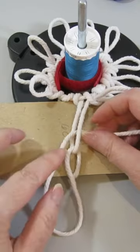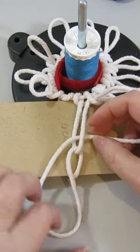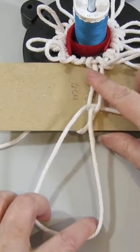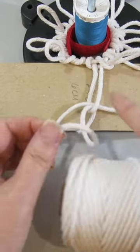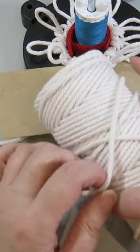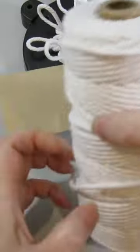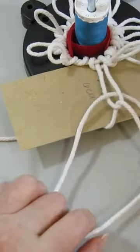You want your working yarn on the left side here. You're going to pull it so that it's big enough to get your spool through. You're just coming in from underneath and pulling it through.